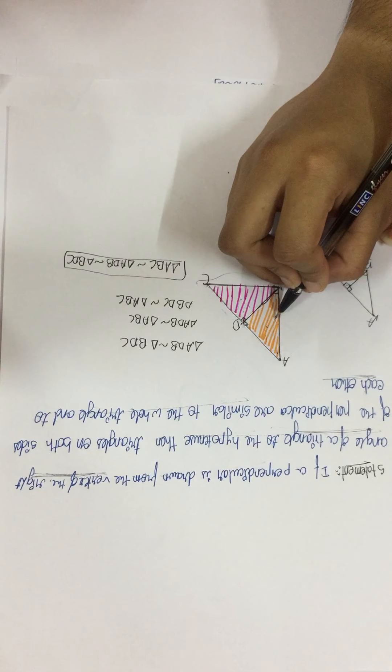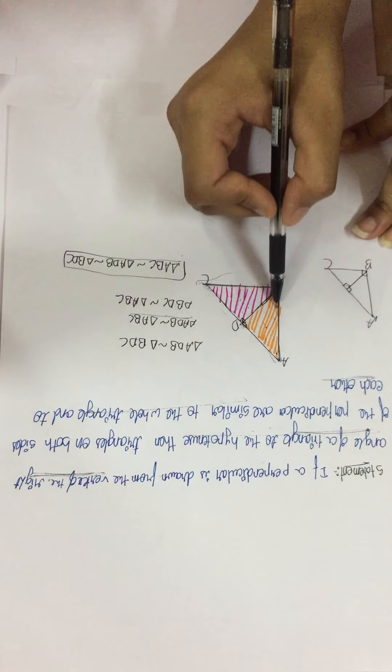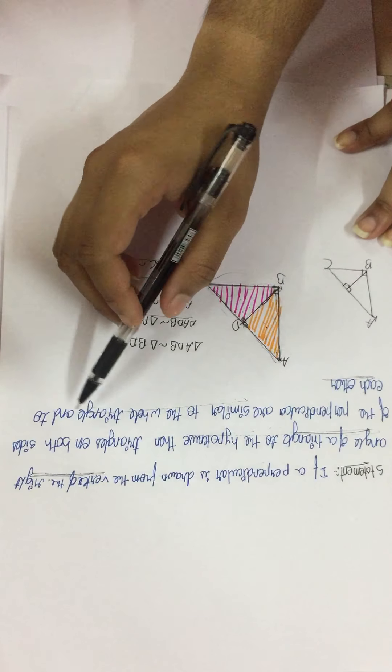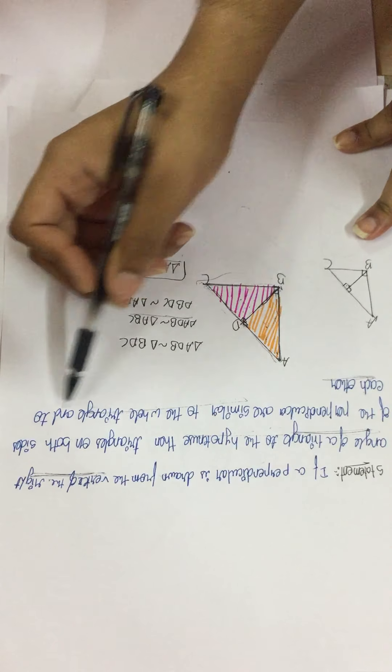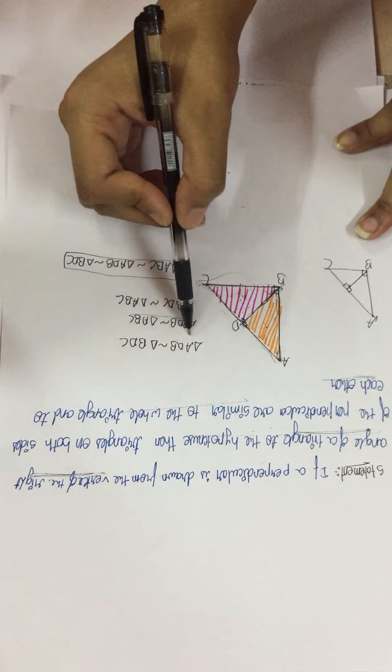On both sides of the perpendicular, there are two triangles — the orange triangle and the pink triangle. So what is this theorem telling us? It is telling us that the triangles on both sides of the perpendicular are similar to the whole triangle. This orange triangle ADB is similar to this full triangle ABC, and similarly that small triangle is also similar to the full triangle.